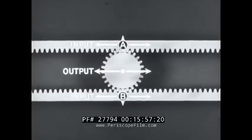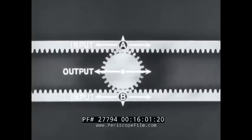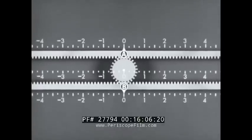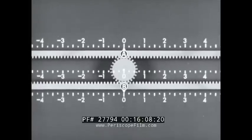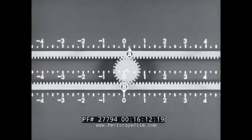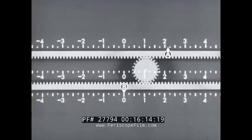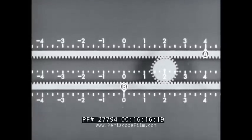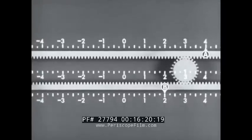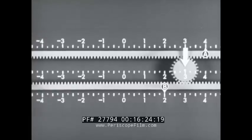Either rack, A or B, or the pinion may be used as the output. The other two parts, then, are inputs. We'll use the pinion for output, the racks for inputs. Now let's examine the mechanical action. Motion will be plus or minus, measured with reference to the zero point. Move A four inches in a plus direction, and B two inches. The sum is six inches. Note that the pinion center has moved three inches, or half the sum of the rack displacements.